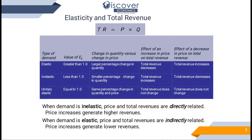When demand is inelastic, price and total revenue are directly related — a price increase generates higher revenues. When demand is elastic, price and total revenue are indirectly related — a price increase generates lower revenue, meaning instead of getting benefits you face lower revenues.